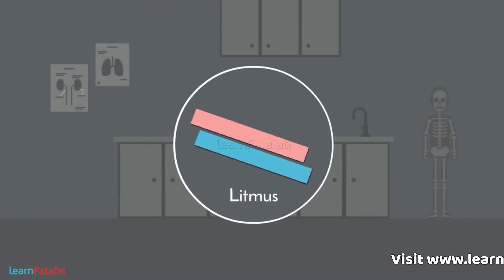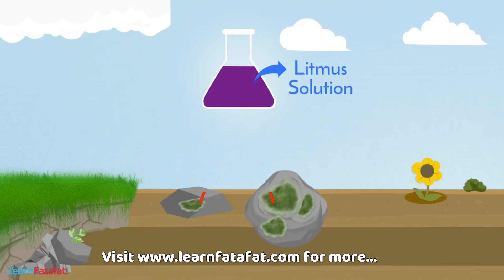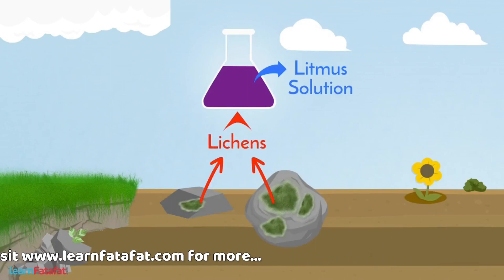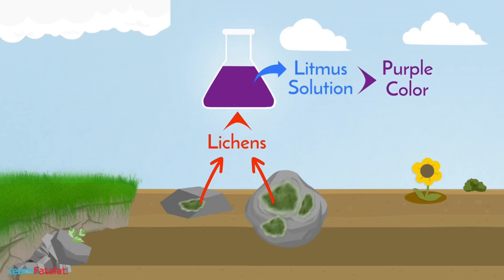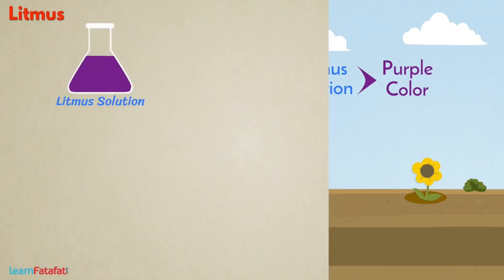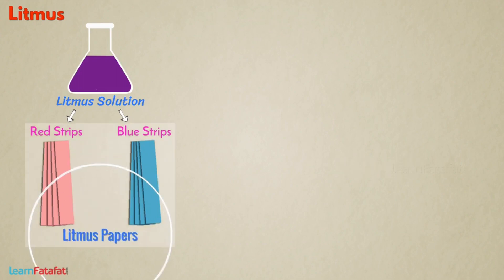Let's learn how we can use litmus as an indicator. It is a solution extracted from lichens, and usually it is mixed with distilled water. This solution has a purple color. It can be used in the form of solution. However, usually red and blue paper strips are made from it, which are known as litmus papers.